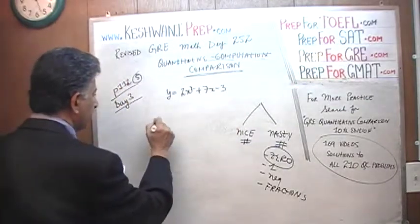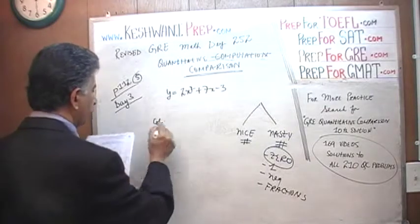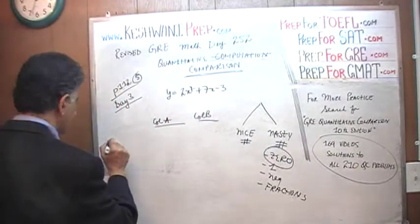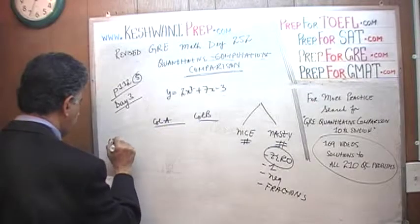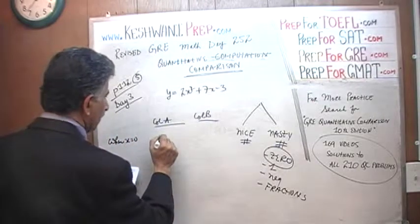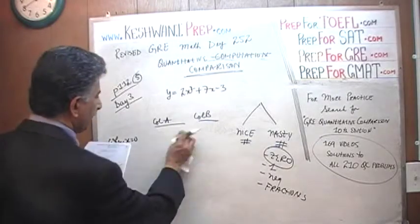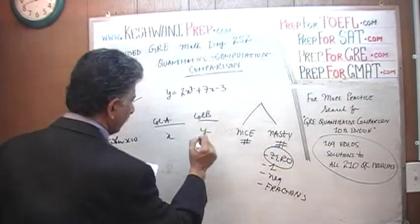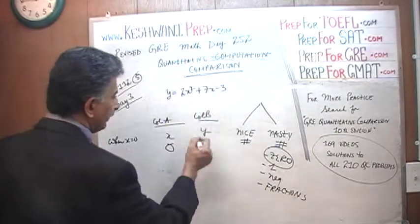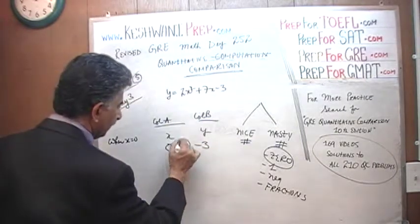Here is column A and here is column B. When x is equal to zero: in column A we have x, in column B we have y. When x equals zero, we find that y is negative three. In this case the answer is A — zero is bigger.